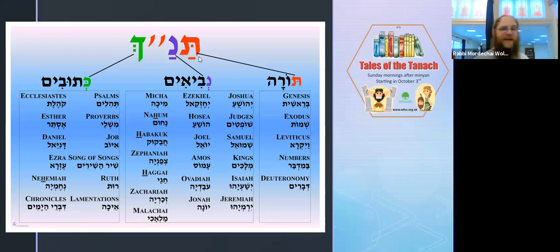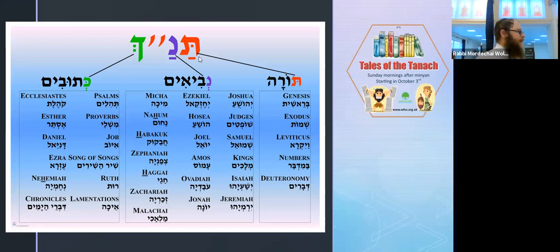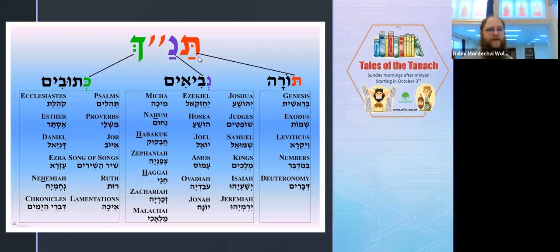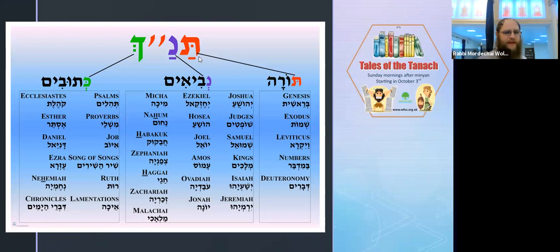When we talk about Tanakh, it's Torah, Navi'im, Ketuvim. Torah is Chumash - five books in the right-hand column. Then you have Navi'im, which we'll look at in a minute - the Prophets - and Ketuvim is Writings.